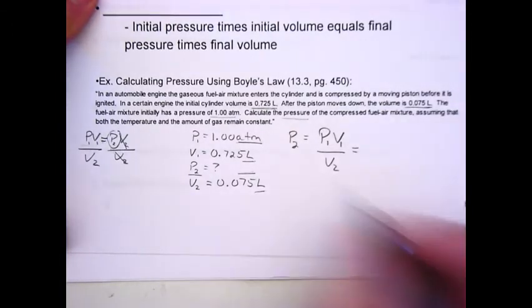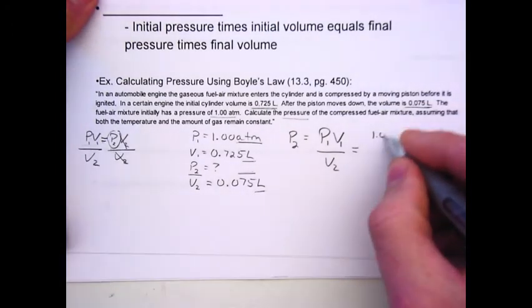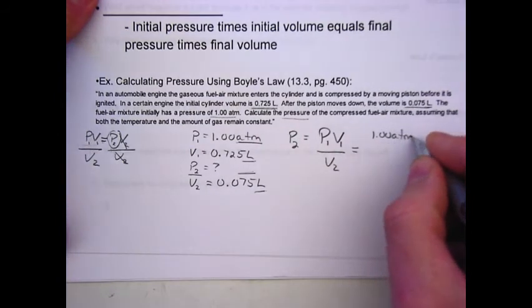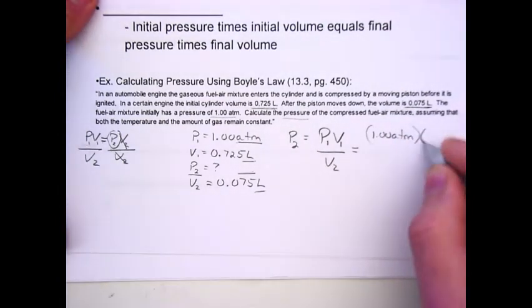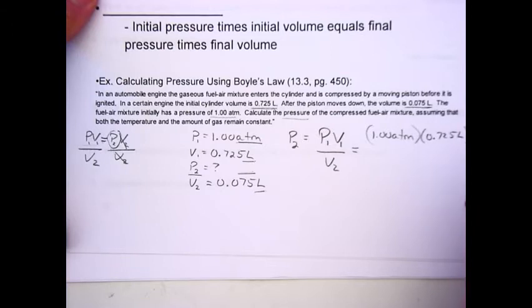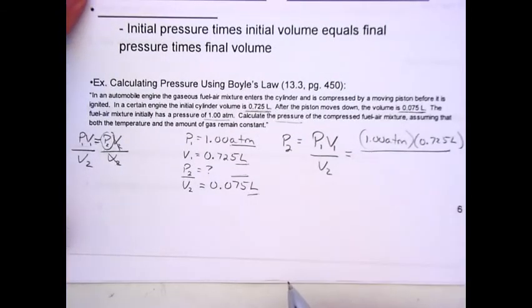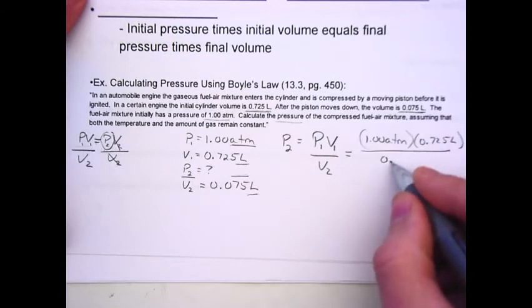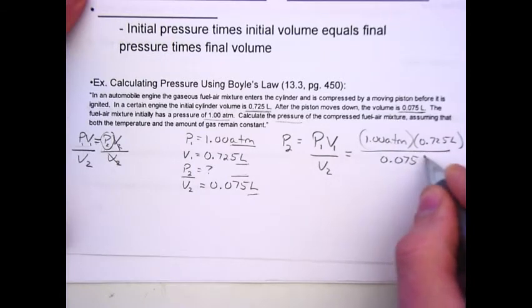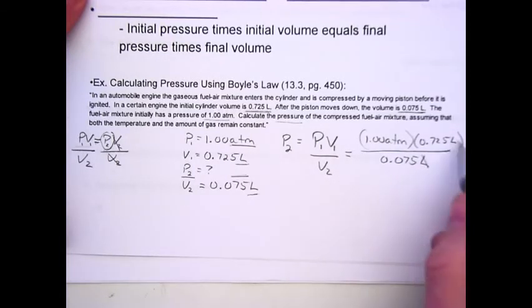Once we've rearranged it in letter form, we now plug the numbers in. P1 was 1.00 atmospheres. V1 is equal to 0.725 liters. And V2 on the bottom is equal to 0.075 liters. The liters cancel out, leaving us with atmospheres.